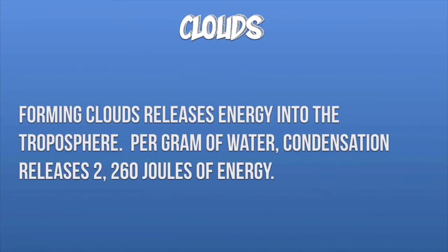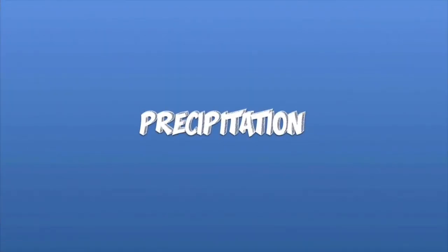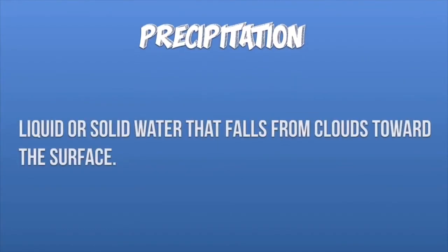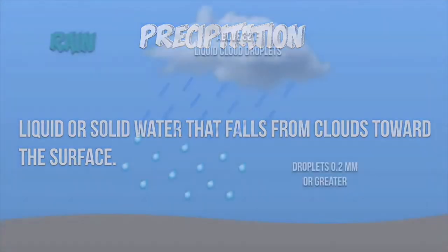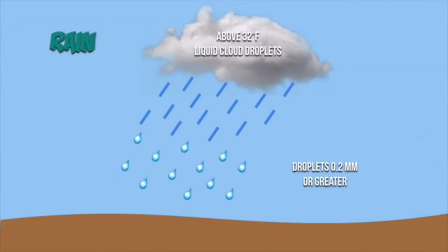Let's shift into precipitation because it is closely associated with clouds. Precipitation is any liquid or solid water falling from clouds towards the surface. There are six types of precipitation. Starting with the most obvious — rain — which occurs when the cloud forms with water vapor that's above 32 degrees Fahrenheit, the freezing point of water, so liquid droplets of water will form.